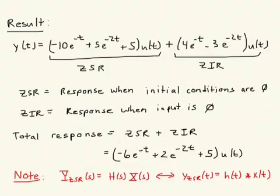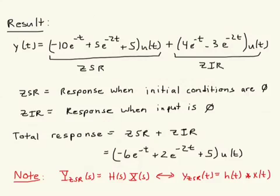One other note about the ZSR: the transform of the ZSR is simply equal to H(s), the system function, times X(s), the transform of the input. Or written another way, the ZSR is h(t), the impulse response of the system, convolved with the input. That's the response when the system starts off in a zero initial state, meaning all of the initial conditions are zero.